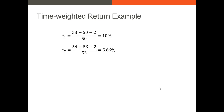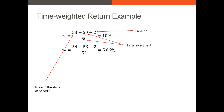The first step is to calculate the holding period return for each period. We have two periods: 0 to 1 and 1 to 2. In the first period, our initial investment was $50 per share, price at time 1 was $53, and dividend per share was $2 — giving a return of 10%. In the second period, the starting price is $53, ending price is $54, dividend is $2, divided by the starting price of $53 — giving a return of 5.66%.